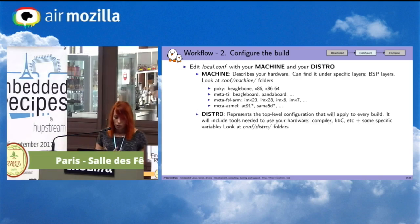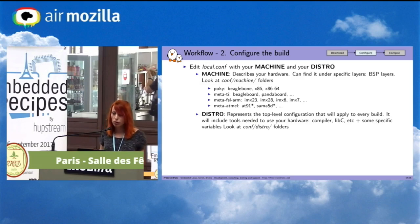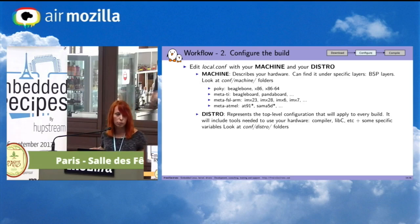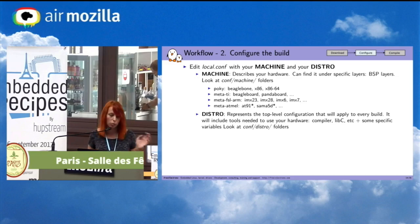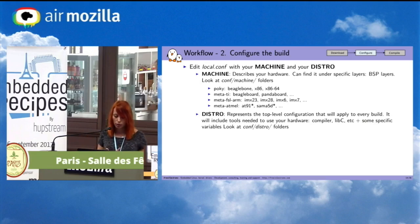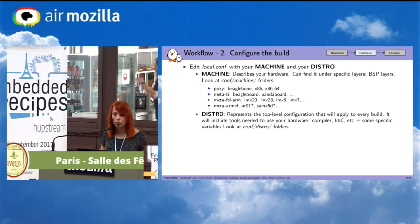There are already some existing machines. In Poky you have BeagleBone and x86. In the Texas Instruments layer you will find BeagleBone and PandaBoard. The Freescale ARM layer provides some i.MX machines and many others. For the distro, it represents the top-level configurations that apply to every build, including tools such as the compiler and libc, plus some specific variables.